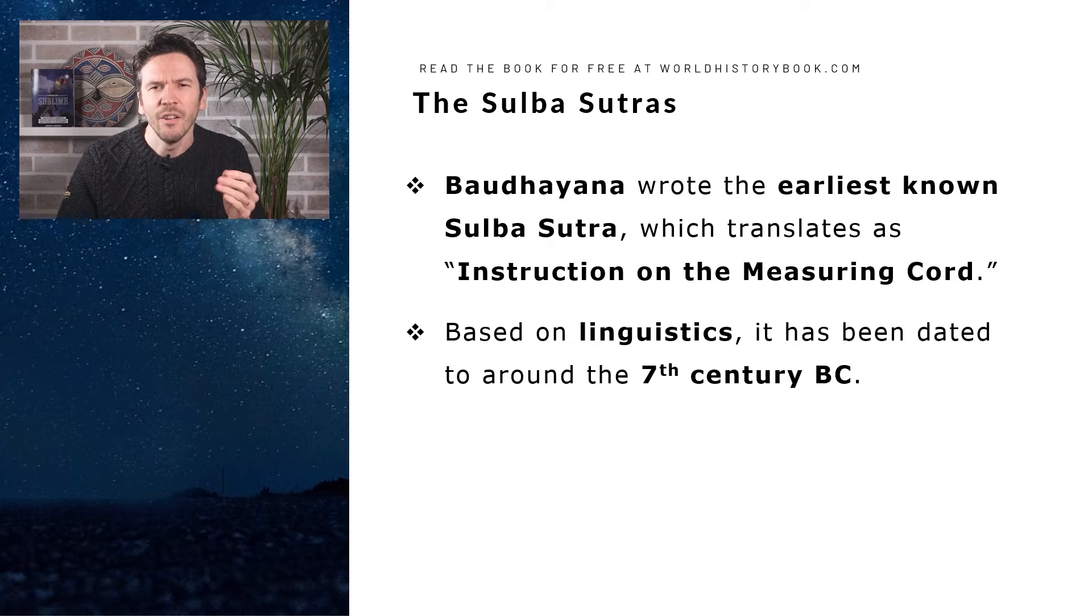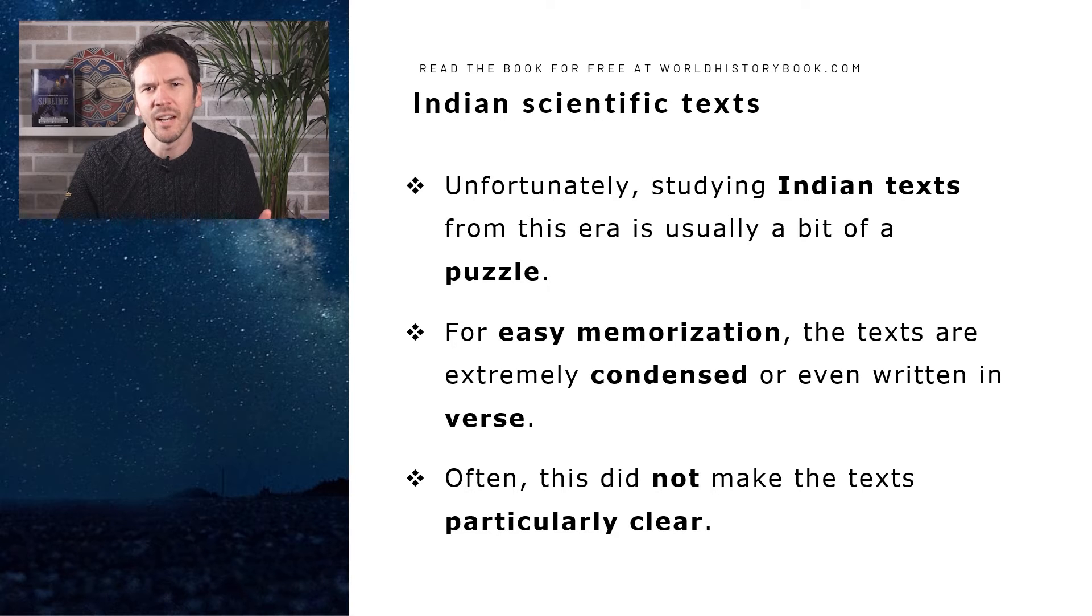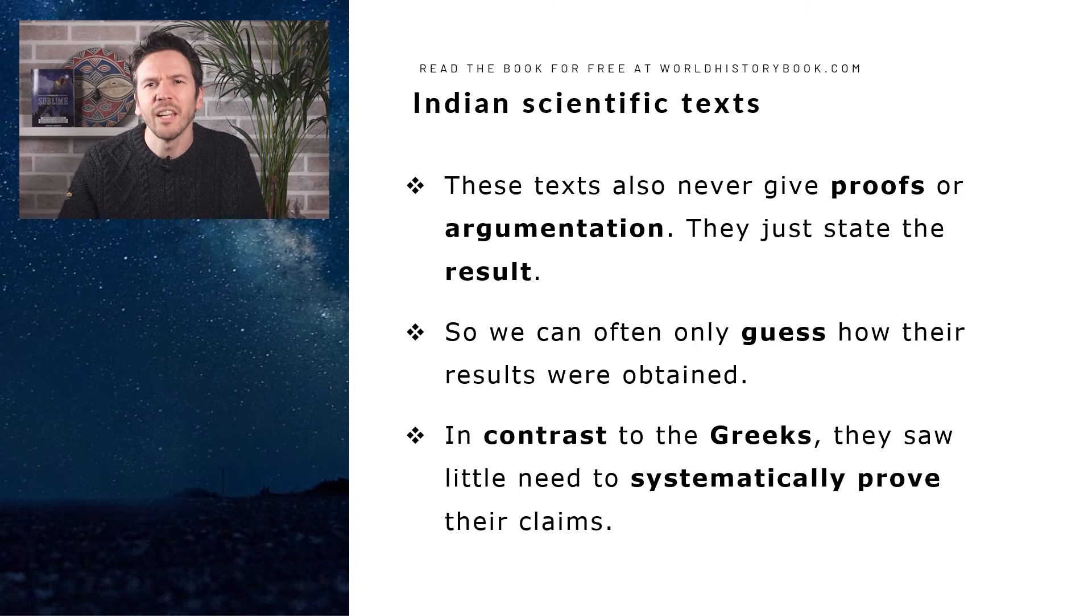Based on the study of the vocabulary and grammar of the texts, linguists have dated it to around the 7th century BC. Unfortunately, studying Indian texts from this era is usually a bit of a puzzle. For easy memorization, the texts are extremely condensed or even written as a poem. Often, this did not make those texts particularly clear. The content likely had to be taught from master to student, and these texts were used to memorize the key lessons. These early Indian texts also never give proofs or argumentation. They just state the results, which means we often can only guess how these results were obtained. This is in stark contrast to the Greeks, who made great efforts to systematically prove all their claims.